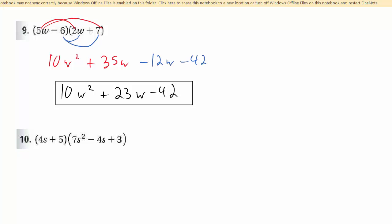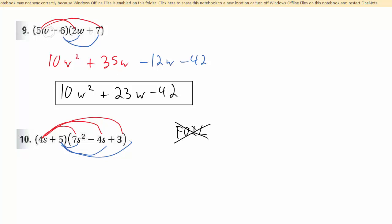Number 10 is a good example of why I don't like to teach the FOIL mnemonic. Because if you use FOIL here, you'll completely skip over the 4s term. FOIL — First, Outer, Inner, Last — is a great mnemonic, but it doesn't work unless you're doing a binomial times a binomial. As soon as you do something like a trinomial, negative 4s isn't the outer, the inner, or the last — it's none of those. So just use distributive property — that's all it is.